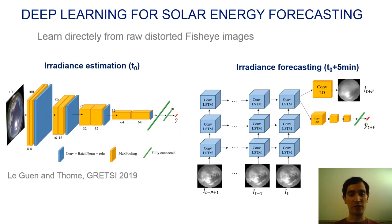In this context, deep learning is an appealing solution for learning directly from large datasets with fisheye images. Previous works have shown that deep neural networks can achieve promising results for both the irradiance estimation and forecasting tasks. Still, extrapolating cloud motion is a very hard weather forecasting problem.